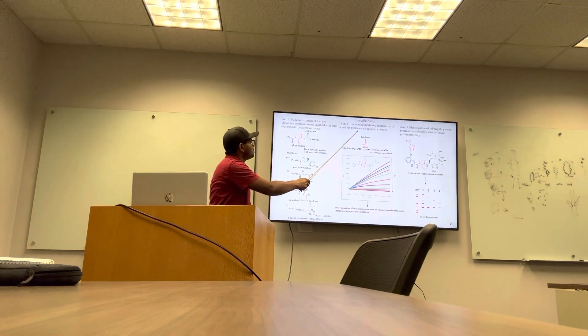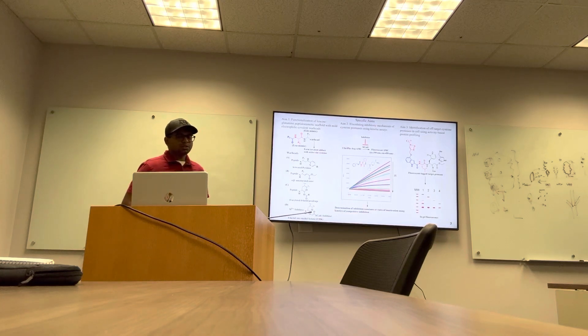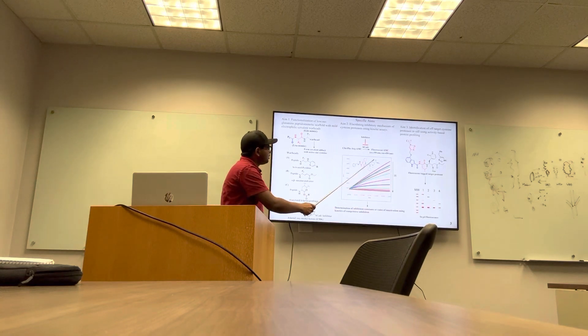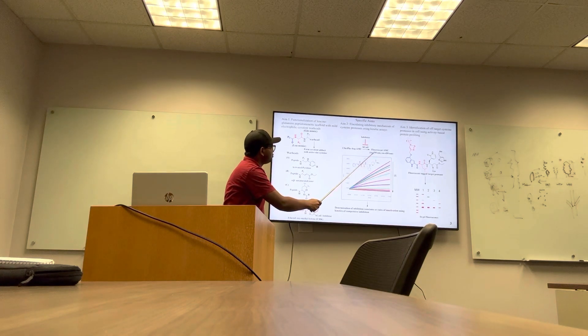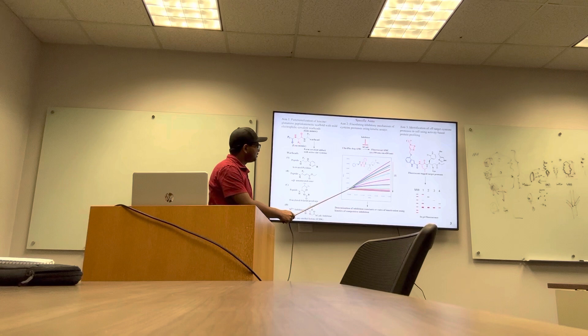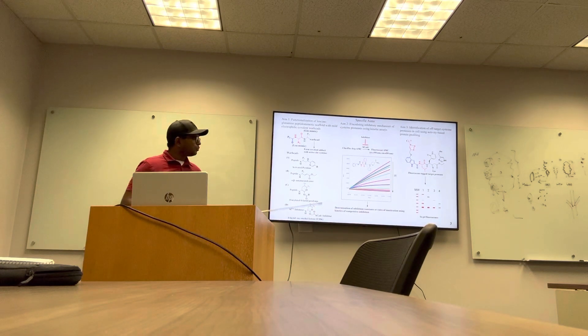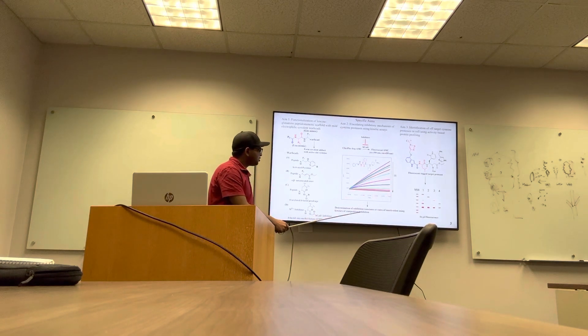Second aim in this proposal is to understand the mechanism of inhibitions using comprehensive kinetic assays. We will do time-dependent fluorescent assays using substrates that get fluorescently activated using the activity of cysteine proteases. From the time course data, we will calculate the initial velocities or steady-state velocities and employ these velocities into equations of competitive inhibitions and determine all the variables of inhibition such as inhibition constants or rate of inactivation.